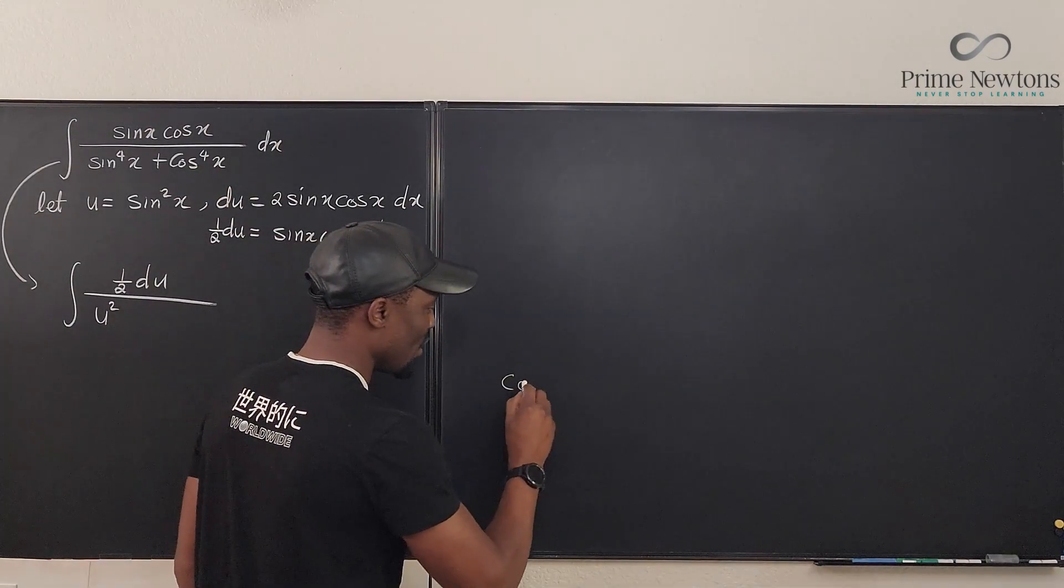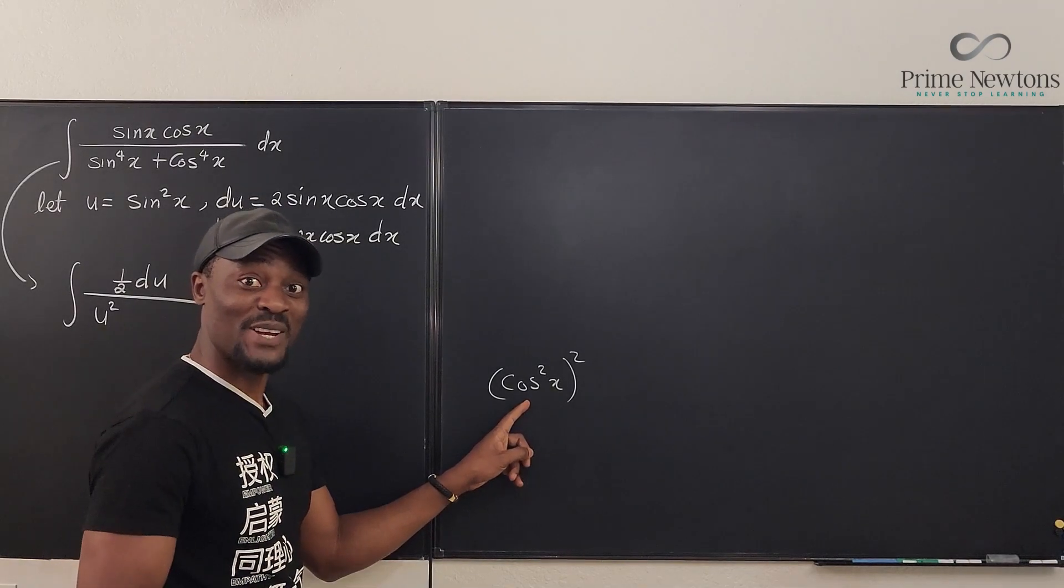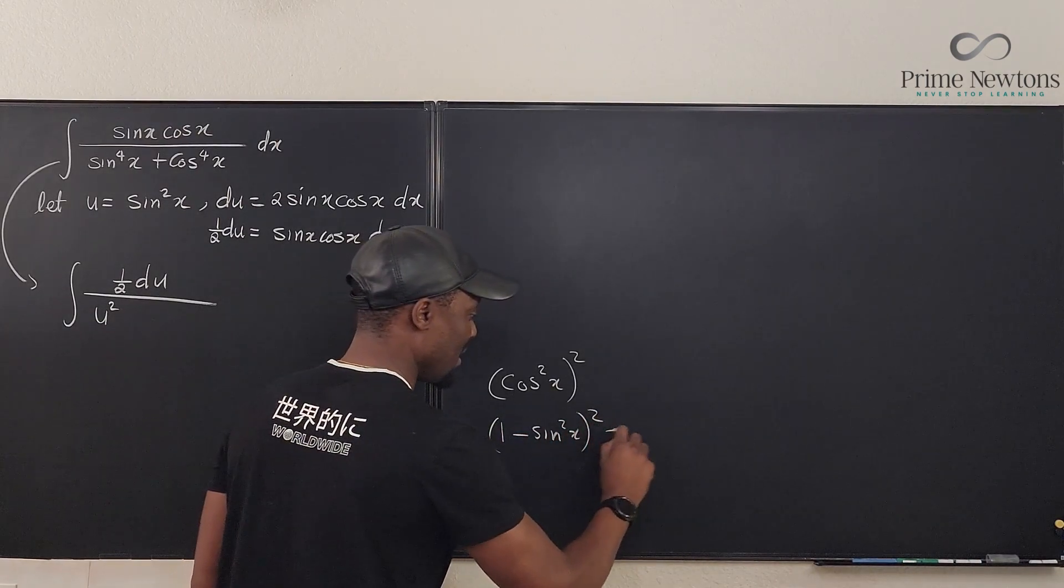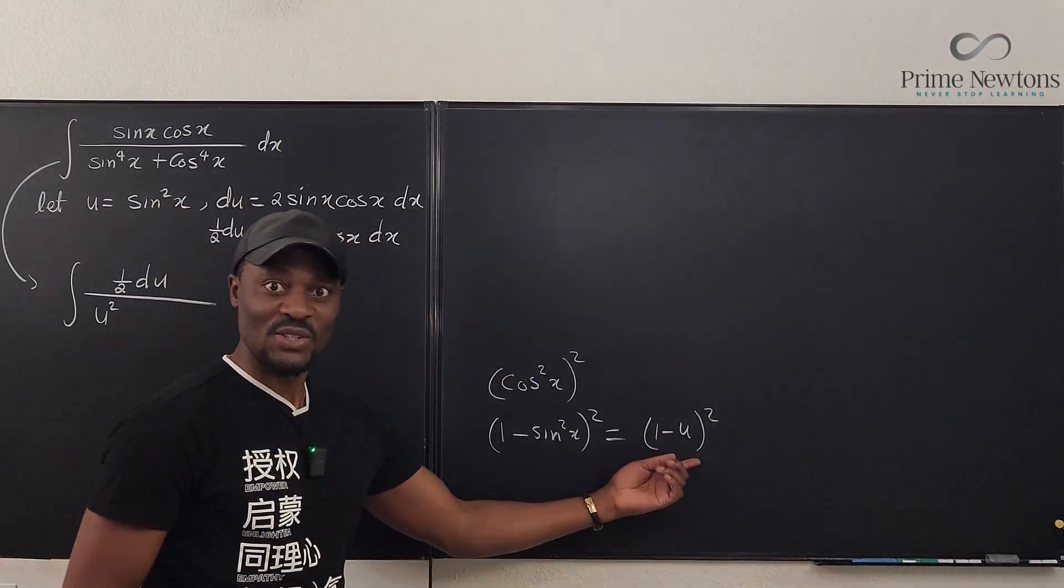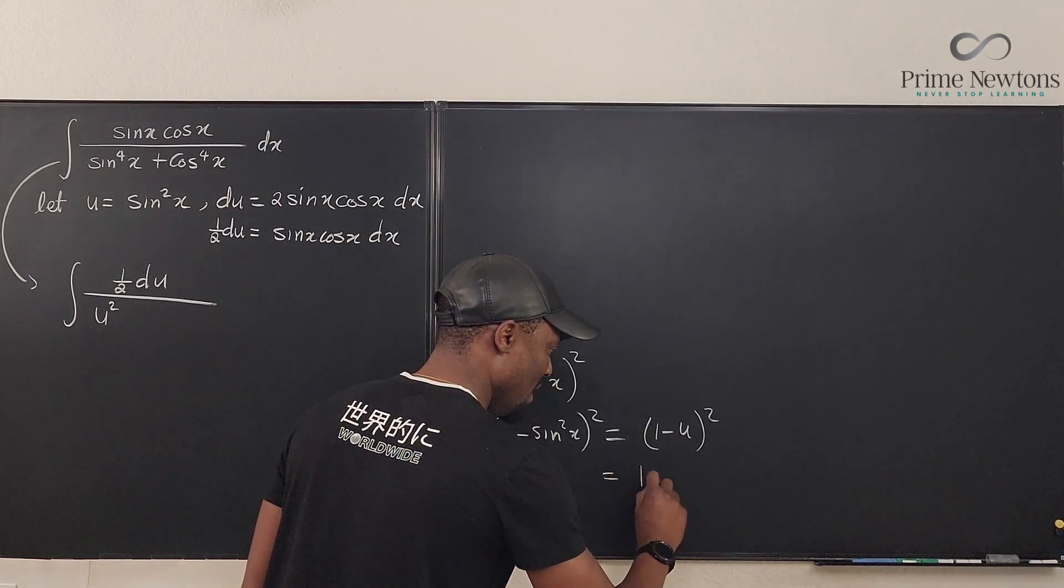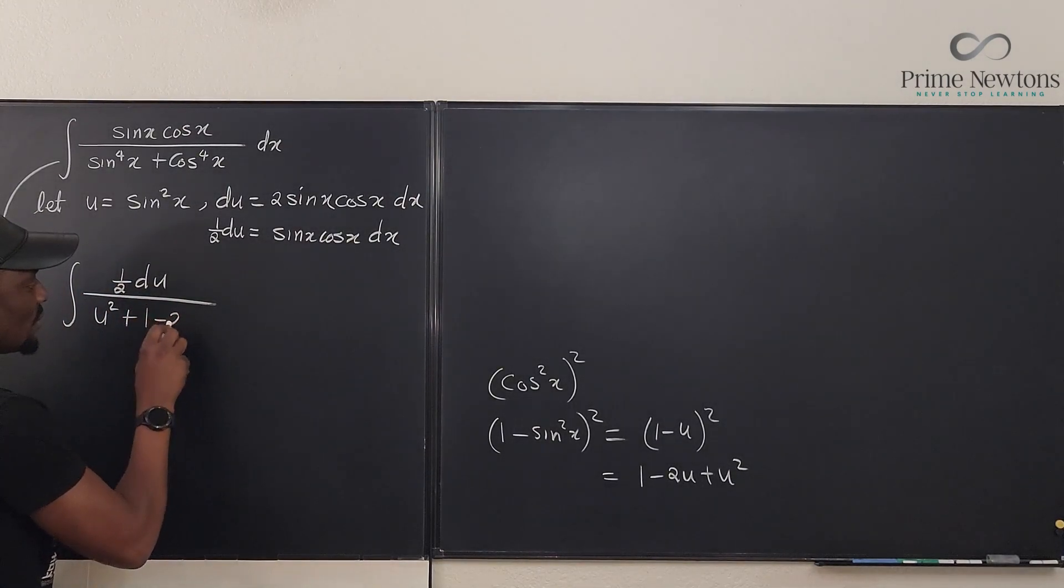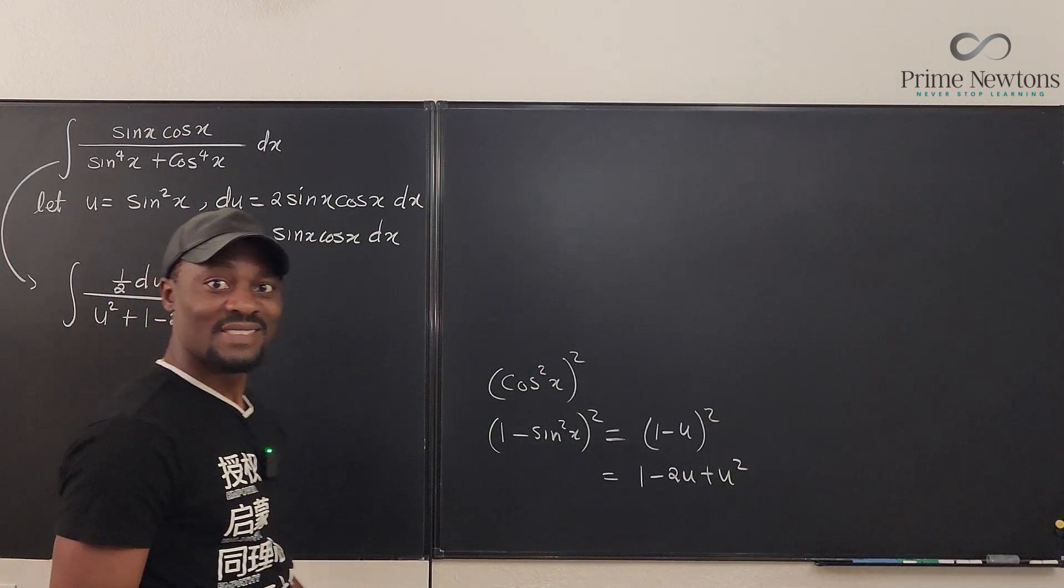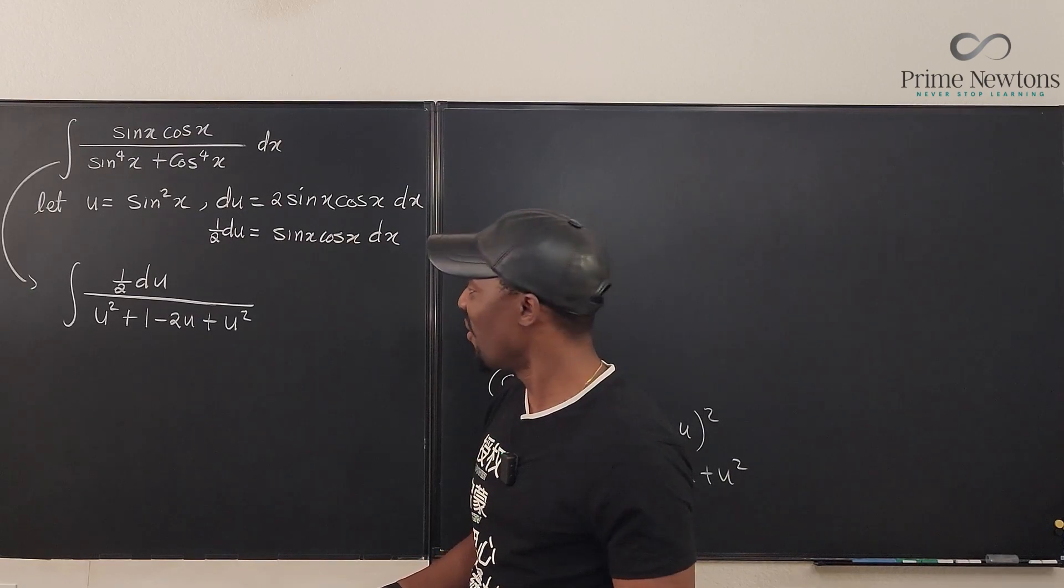And what is cosine to the fourth x? Well, it's going to be cosine squared x squared, but we know that cosine squared x is 1 minus sine squared x, so this is (1 - sine squared x) squared, which is, but we said sine squared x is u, so this is (1 - u)². It looks a lot easier, right? Let's actually expand this and see what we get. If we expand this, this equals 1 - 2u + u², so we're coming here and writing plus 1 - 2u + u². That's what we get.